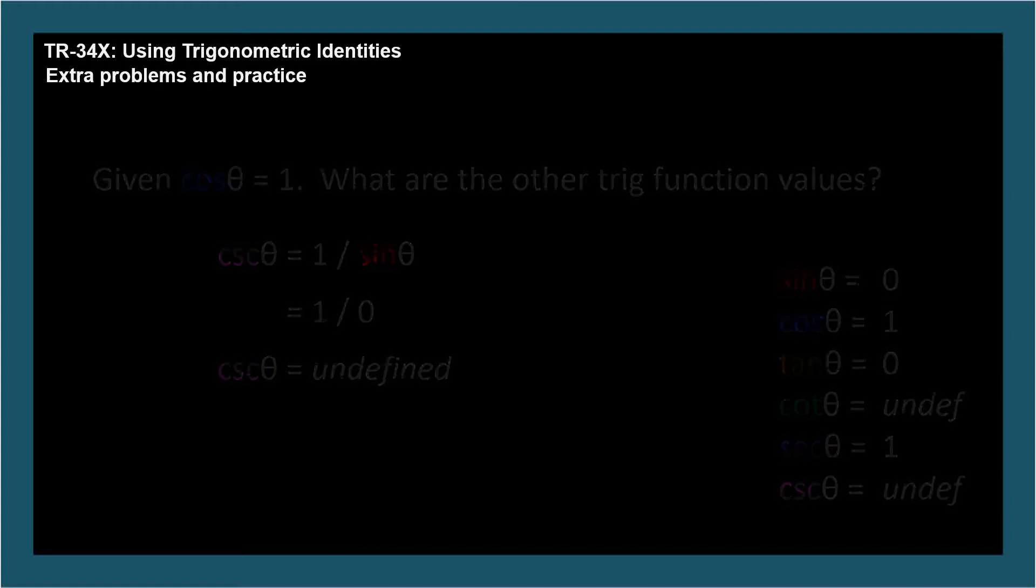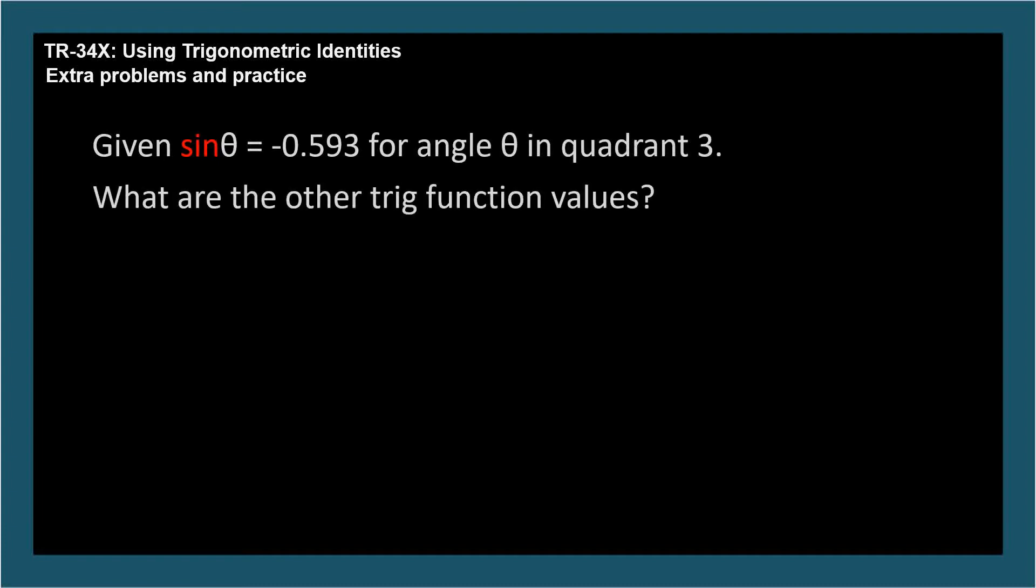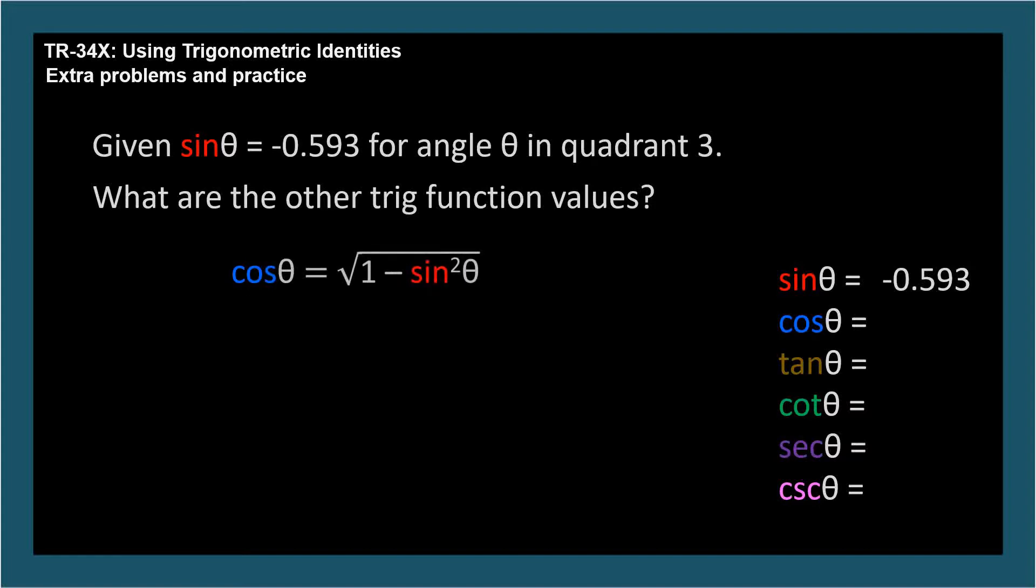Let's do another one. We're given that sine theta equals negative 0.593, and that theta is in quadrant 3. What are the other trig function values for theta? Here's our checklist again. We're given sine. Since we know sine, we can find cosine using the Pythagorean identity. Plugging in the value for sine, we get cosine theta equals plus or minus 0.805. We're told that theta is in quadrant 3, so we know that both cosine and sine are negative. So cosine theta equals negative 0.805.